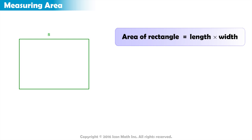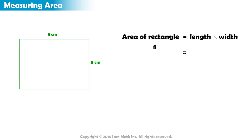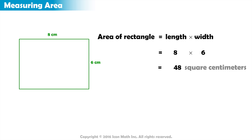Let us test the formula. This is an 8 centimeters by 6 centimeters rectangle. What is its area? We calculate the product of 8 and 6. 8 times 6 equals 48. Area is measured in square units and the unit used here is the centimeter. So the area of the rectangle is equal to 48 square centimeters.